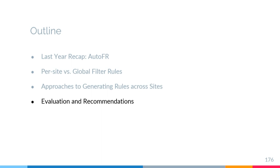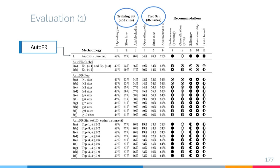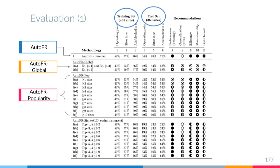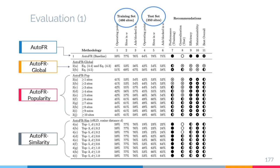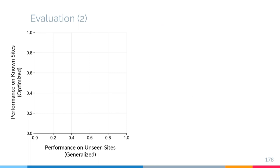Let me describe our evaluation of these approaches. We take our dataset of site snapshots and split them into a training set — our known sites for which we optimize rules — and a test set serving as unseen sites. We apply AutoFR as a baseline. For AutoFR Global we evaluate two different reward functions including the average of rewards. For AutoFR Popularity we evaluate thresholds from one through ten. For AutoFR Similarity we evaluate cosine similarity on ESLD vectors and whether to use rules from the top one, three, or five similar sites. Let me plot the best results.